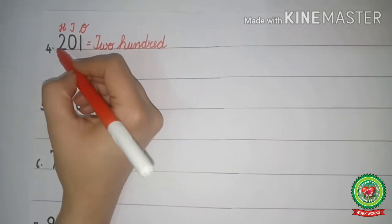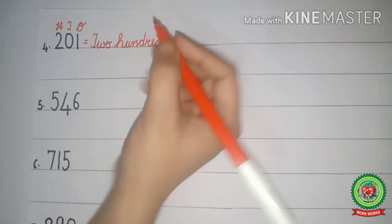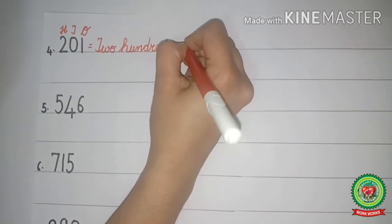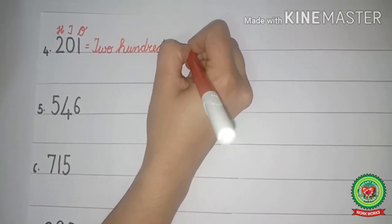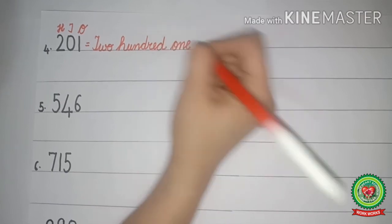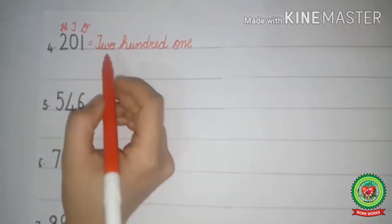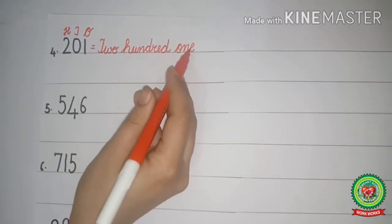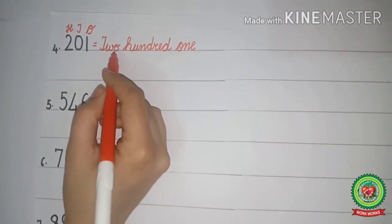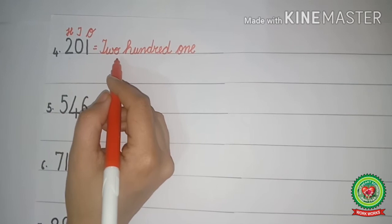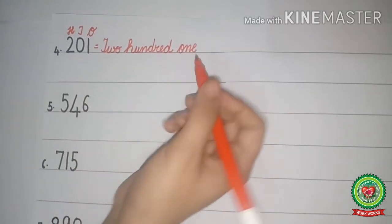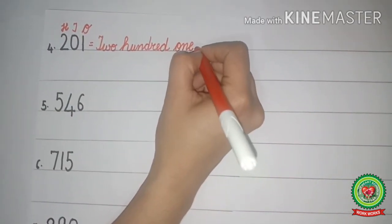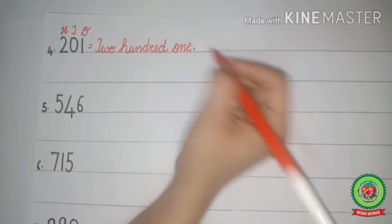And what is under 1s? 1. So we will write 1 only. Now what does it become? 201. What does it become? 201. And at the end we will put a full stop.